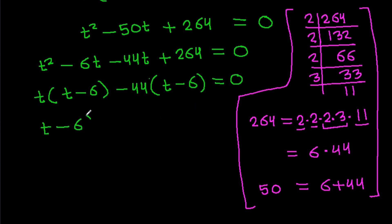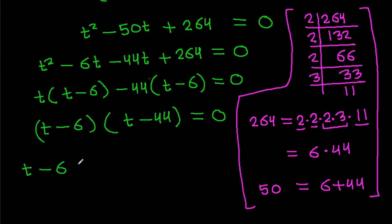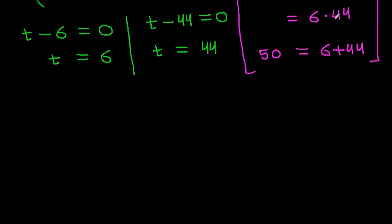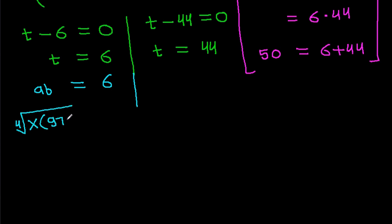Factoring: t(t minus 6) minus 44(t minus 6) equals 0, so (t minus 6)(t minus 44) equals 0. Therefore either t equals 6 or t equals 44. Since t equals ab equals the 4th root of x(97 minus x), we test each case.